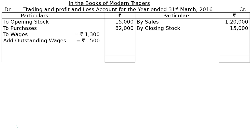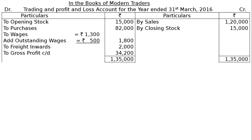Next, wages rupees 1,300, and adding outstanding wages as per adjustment B — outstanding wages rupees 500 — gives a total of rupees 1,800. Freight inward is rupees 2,000. The credit side total is rupees 1,35,000, and the gross profit carried down is rupees 34,200.